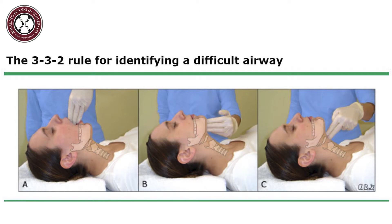Evaluating with the 3-3-2 rule is another method used to determine the likelihood of intubation success. The first three assesses if the patient is able to open their mouth enough to fit three fingers between their upper and lower incisors. If they can, there is a greater likelihood that the laryngoscope blade will fit as well. The second three refers to the ability to place three fingers between the anterior mandible and anterior neck, which gives a rough estimate of the submandibular space, also known as thyromental distance. If the distance is less than three finger breadths, roughly six centimeters, submandibular space is limited, so moving the tongue into this area with the blade enough to get an adequate glottic view will be difficult.